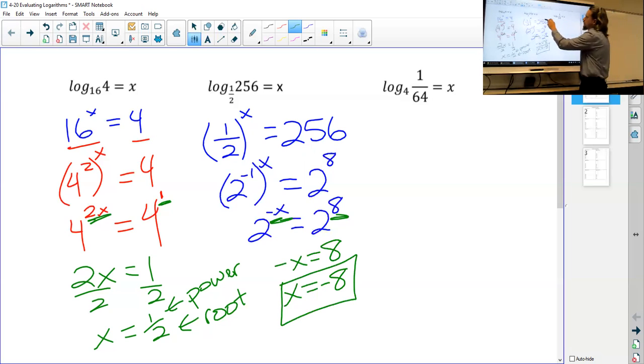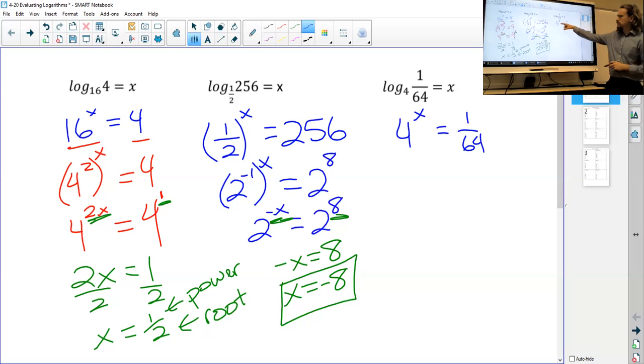Okay. All right. One more. So log base 4, 1 over 64 equals x. So this is going to be 4 to the x equals 1 over 64. And based on the last one, I know my answer is going to be x equals negative something. And this one's a little bit easier. 4 and 64. I say 4 to what power is 64? So 4 times 4 is 16. 16 times 4 is 64. So that's the third power.